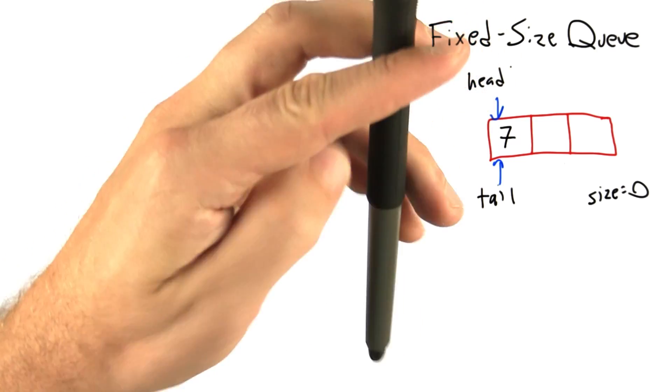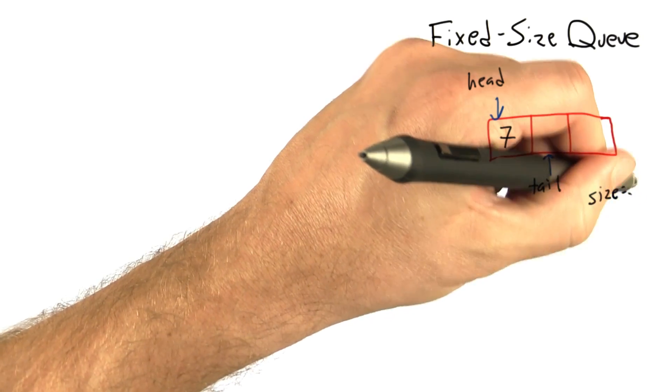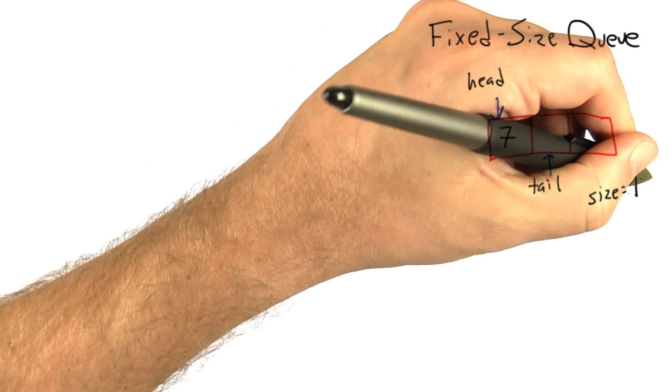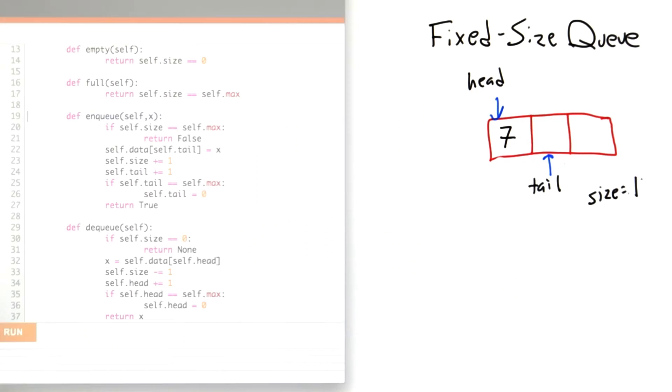Then we're going to increment the tail, and the last thing we have to do to enqueue an element is increase the size of the queue to be 1. Looking at the code, we can see that we put the element in the queue, increase the size, and move the tail to point to the next element.